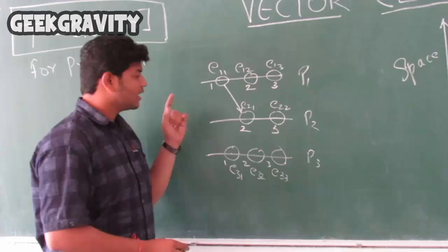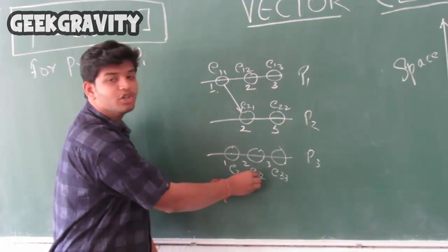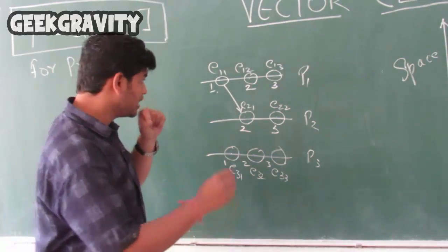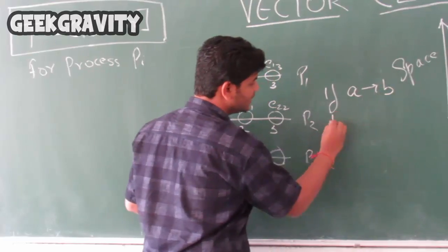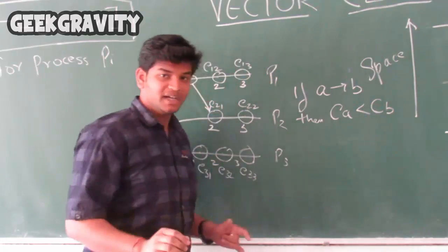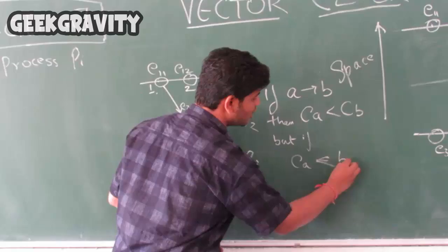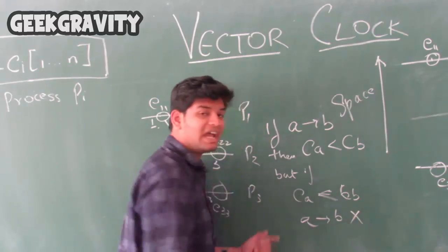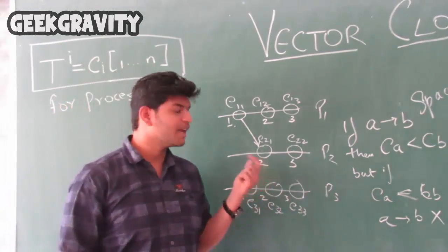Now I am going to the limitation. Even though we can see that the timestamp of E1 is less than E2, we cannot say there is a happen-before relation between these two because of the partial order. That is, in Lamport clock, if A happened before B, then we can say that C(A) will be less than C(B). But if C(A) is less than C(B), then we cannot say that A happened before B. This is not true every time — this is the partial ordering problem and the main limitation of the Lamport clock. So to avoid this, there came the vector clock.